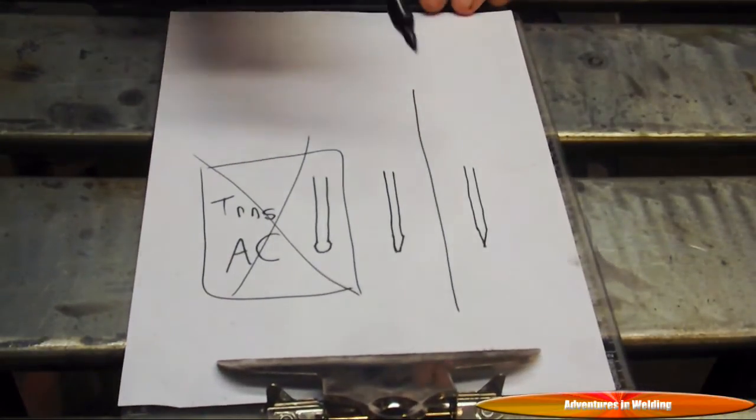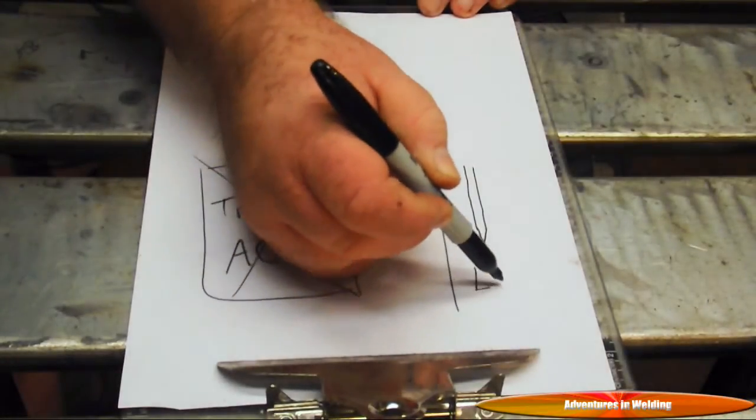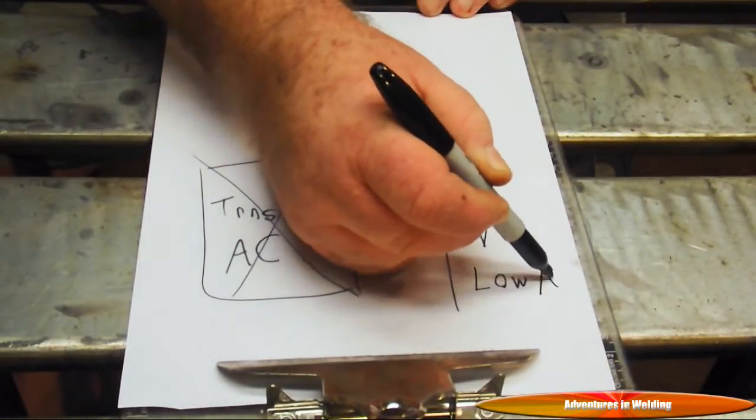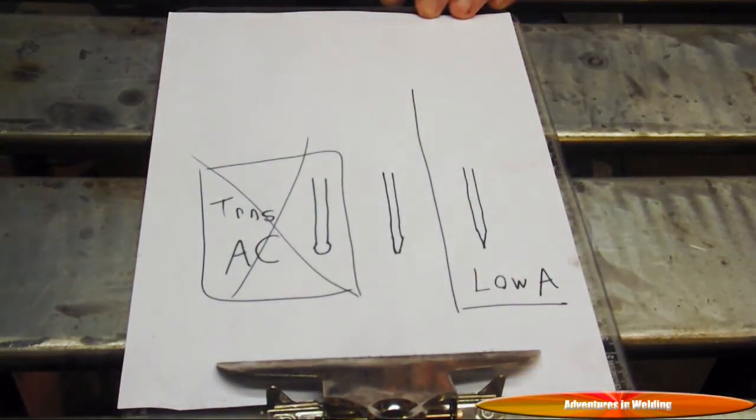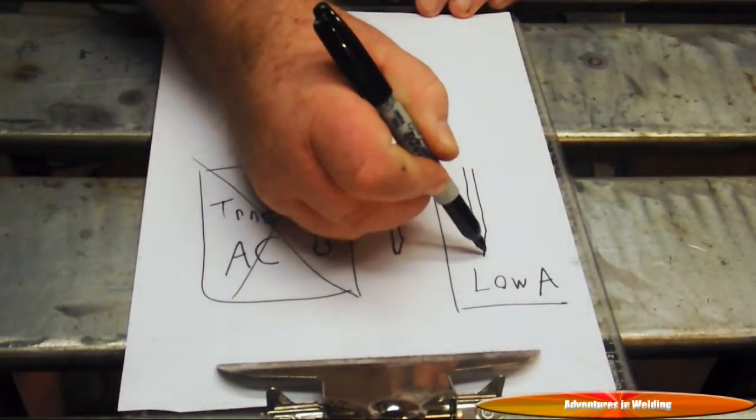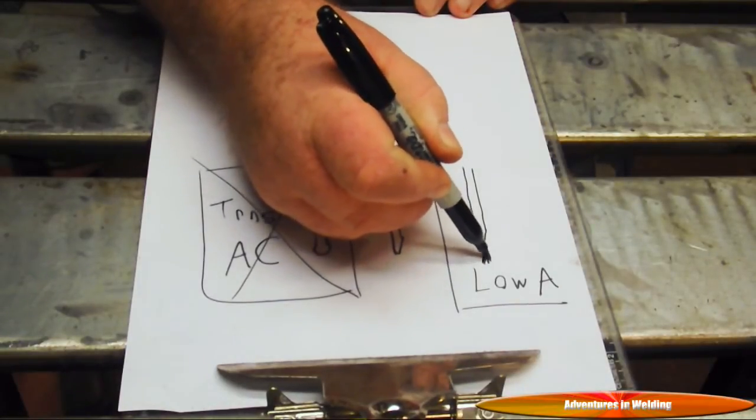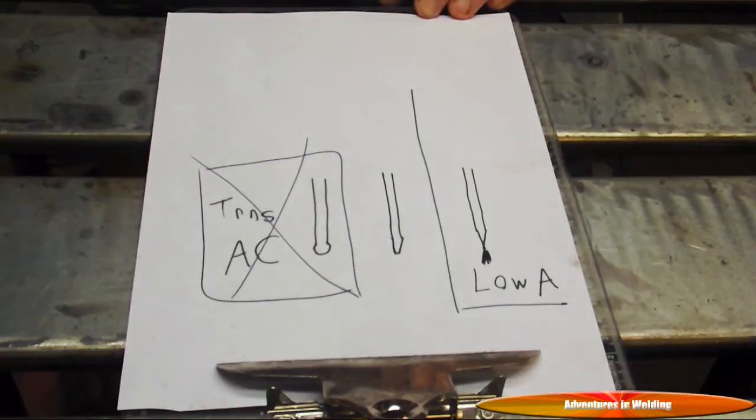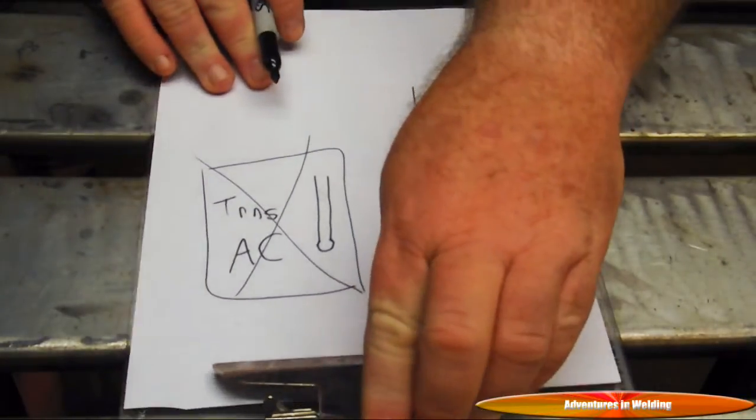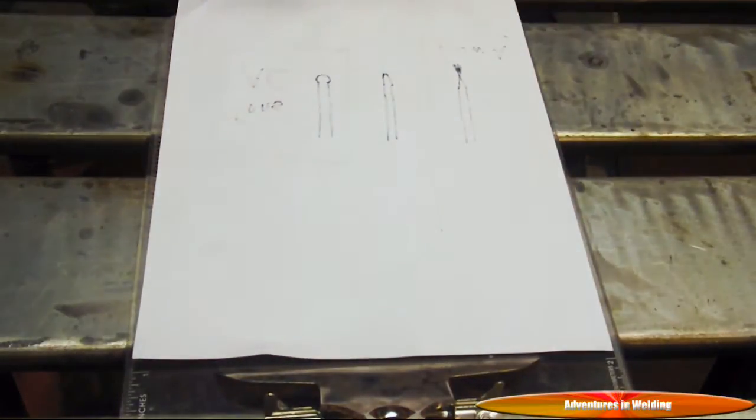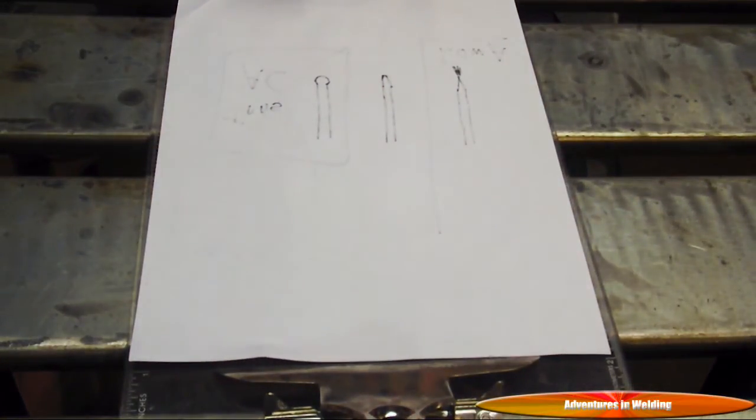Now we have the point and the truncated point. The point is only good for low amps, but it does produce a very nice, very focused arc. The truncated grind is good for just about everything.